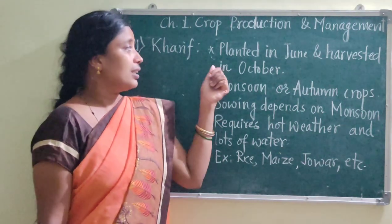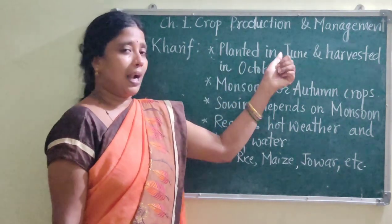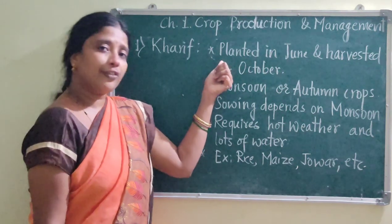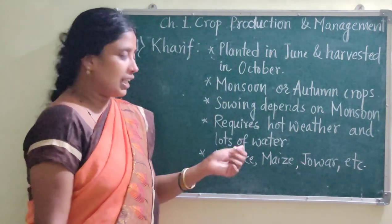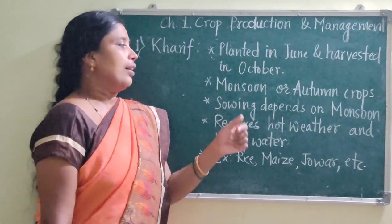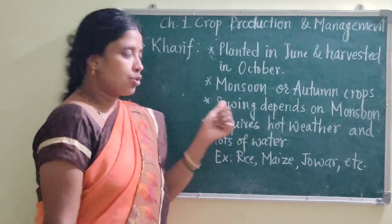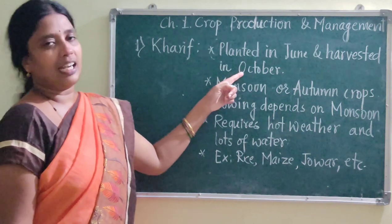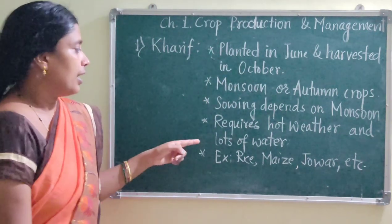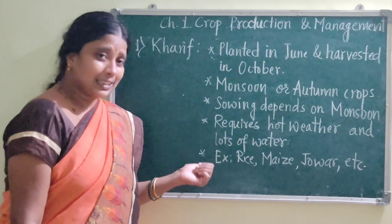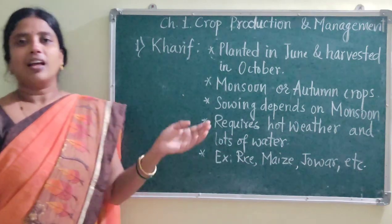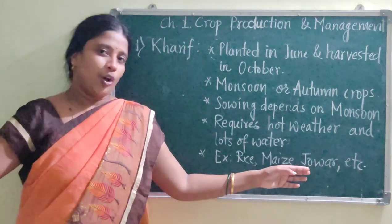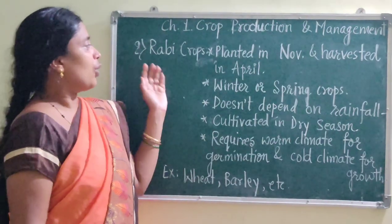Since Kharif crops depend upon monsoon, they are also known as monsoon crops or kharif crops. The sowing of seeds depends upon the arrival of monsoon, and harvesting takes place in October. Examples of such crops are rice, maize, jowar, etc.